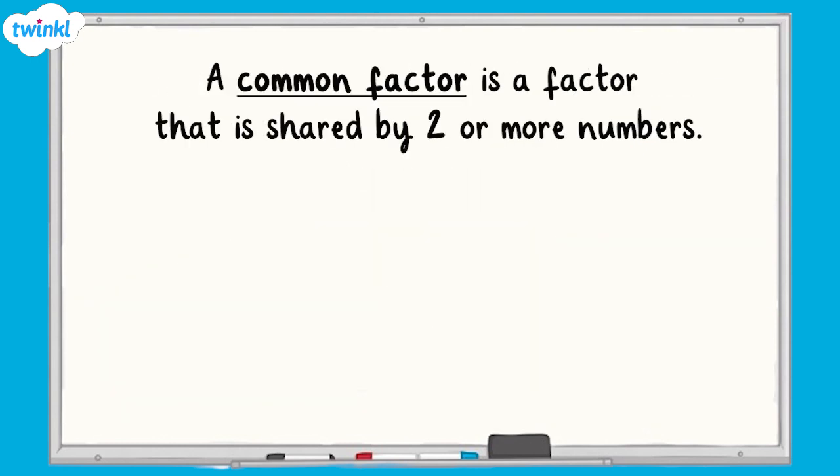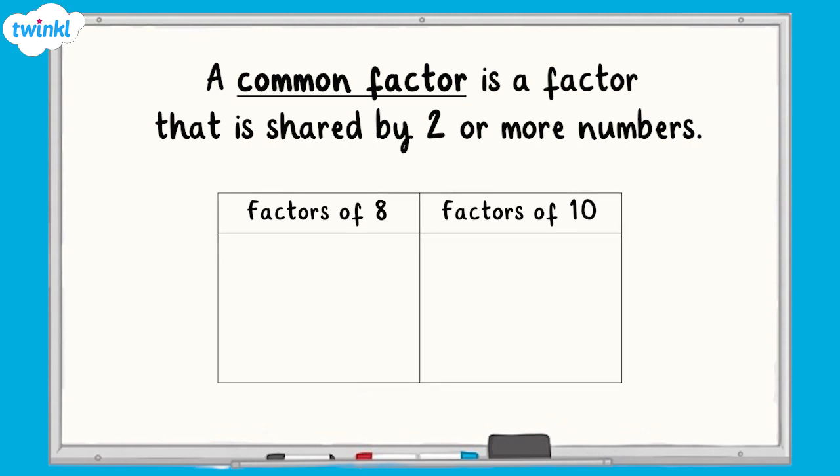A common factor is a factor that is shared by two or more numbers. For example, the factors of 8 are 1, 2, 4 and 8. And the factors of 10 are 1, 2, 5 and 10. Which means that the common factors of both 8 and 10 are 1 and 2.